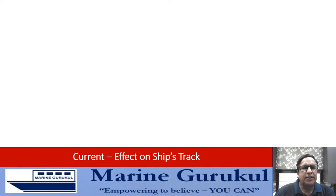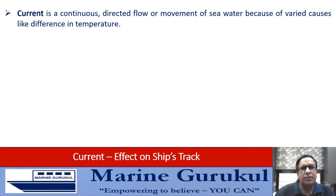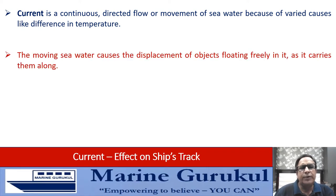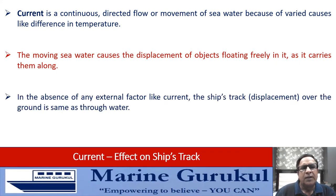Now let's understand the effect of current on a ship's track. Current is a continuous directed flow or movement of sea water due to varied causes like differences in temperature and salinity. The moving sea water causes displacement of objects floating in it, carrying them along. In the absence of current, the ship's track over the ground is the same as its displacement through water.